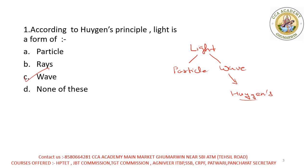Ab baat kare agar particle nature ki, toh particle nature jo hai discover kiya hai woh Einstein ne. So yad rakhna hai — light jo hai particle nature bhi hai aur wave nature mein bhi chalti hai. Toh particle nature Einstein ne kiya hai, aur wave nature Huygens ne kiya hai.